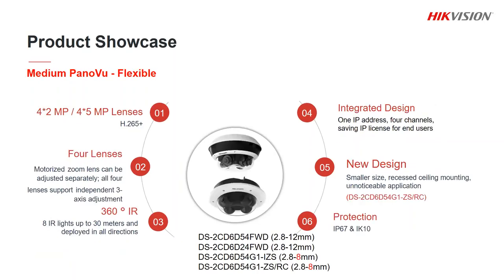Now let's look at the medium PanorViews. This one has four separate varifocal lenses which can all be adjusted completely separately and it can cover a full 360 degrees or give you coverage in four separate directions. There are a few different versions: the ones with FWD in the part code have a choice of 2 megapixel or 5 megapixel lenses with 2.8 to 12mm varifocal lenses, most commonly used outdoors. The ones with G1 instead of FWD are 5 megapixel but slightly smaller with 2.8 to 8mm varifocal lenses, more likely used indoors. The version with RC at the end is designed to be recessed into a ceiling for a more discreet look, but note this one doesn't have any infrared while all the others do.